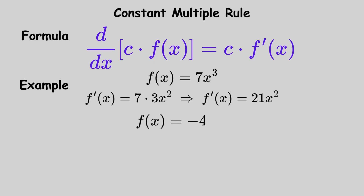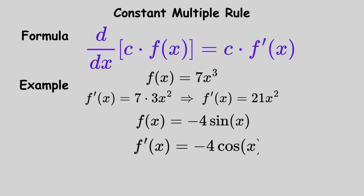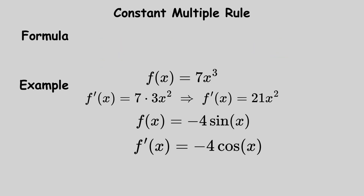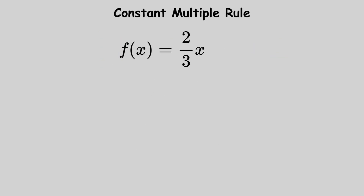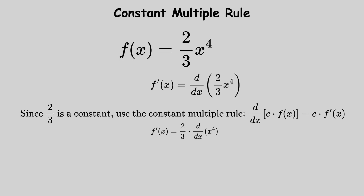If f of x equals negative 4 sine of x, the negative 4 remains while sine of x becomes cosine of x, giving f prime of x equals negative 4 cosine of x. If f of x equals 2 thirds times x to the power 4, we get f prime of x equals 2 thirds times 4x cubed, which is 8 thirds x cubed.